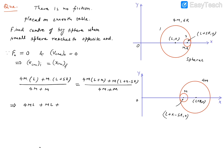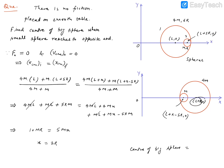Let me write all the calculation steps. Left-hand side: 4ml + 5mr. Right-hand side: 4ml + 4mx + ml + mx − 5rm. Many terms cancel: 4ml cancels, ml cancels, and 5mr cancels. You are left with 5mx on the right side. So x = r... wait — x equals 2r. Therefore the center of the big sphere is at (L+2r, 0).